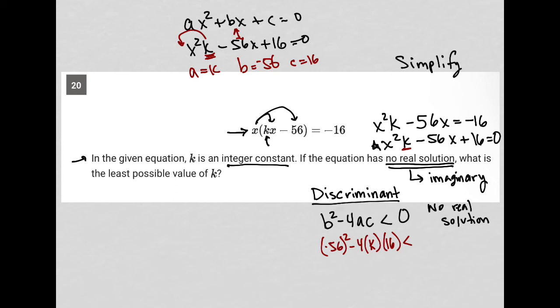We want this less than 0 for no real solution. Using a calculator, (-56)² = 3,136. -4 times 16 is -64, so this becomes 3,136 - 64k < 0.